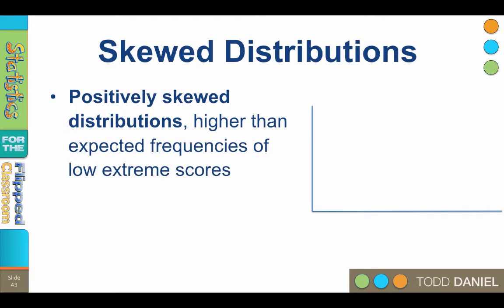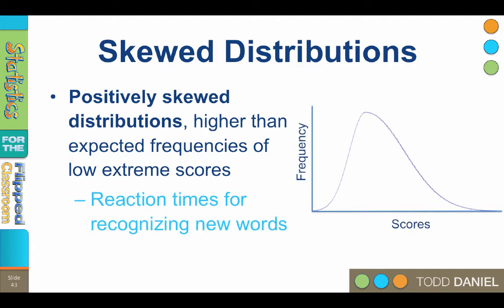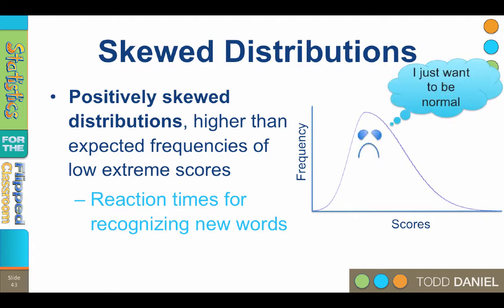In a positively skewed distribution, the higher than expected frequencies are on the low end of the curve. The tail is pulled out on the right, or positive end, of the number line. If we were measuring reaction time, we would expect to have a large number of very quick responses — low scores — and only a few slower responses taking more time further up the positive end of that scale. Skewed distributions are not normal.